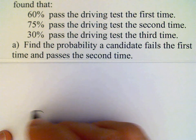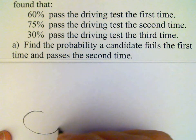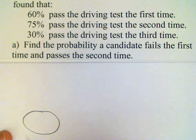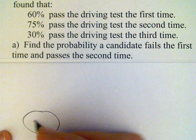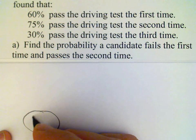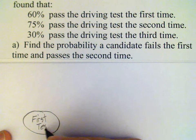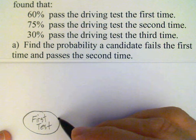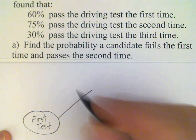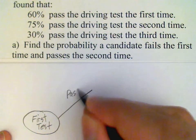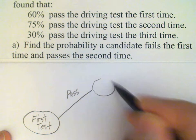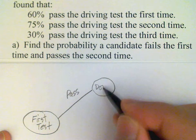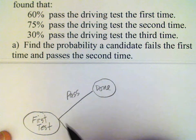So here we go with our tree diagram. We're going to take the driving test first time. Two possibilities here: the candidate could pass, in which case we are done, or the candidate could fail.